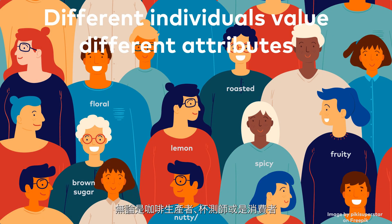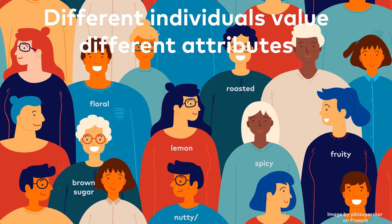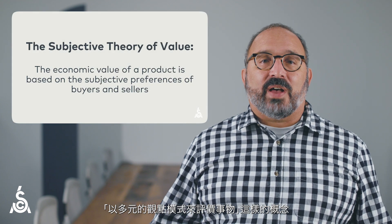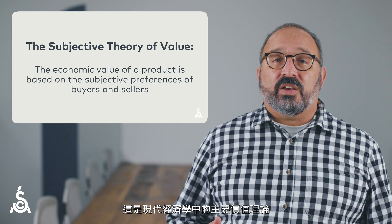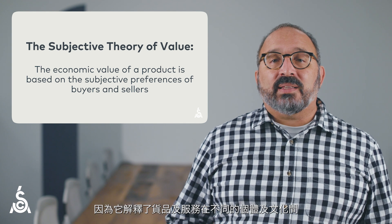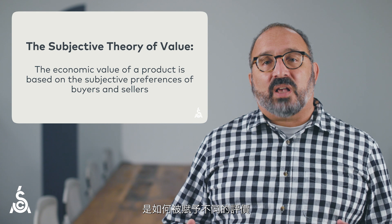So let's talk about how value is related to the attributes we explored in the previous video. To begin with, we must recognize that different individuals — whether coffee producers, tasters, or consumers — will value different attributes differently. Individuals have different needs and expectations, especially in their food and drink. The economic value of a product is based on the subjective preferences of buyers and sellers. This concept is known by economists as the subjective theory of value, which is the dominant theory in modern economics because it explains how goods and services are valued differently across individuals and cultures.